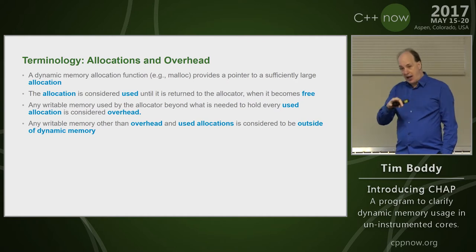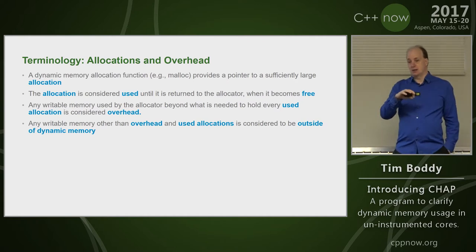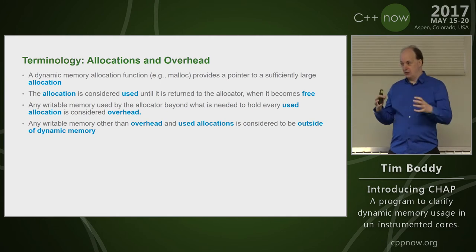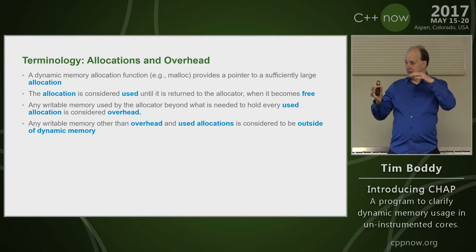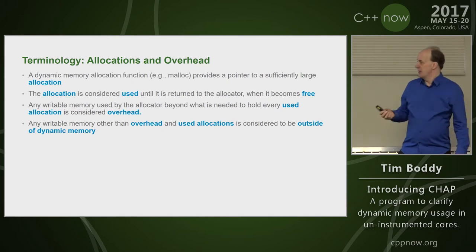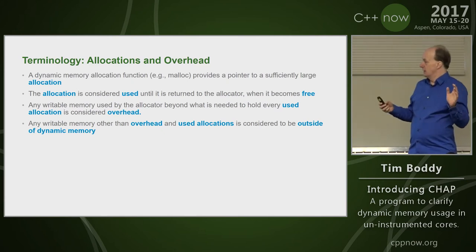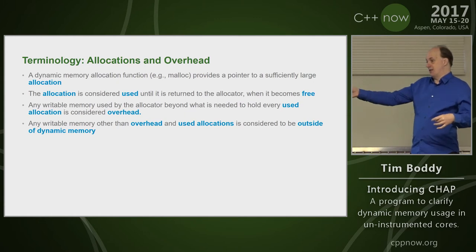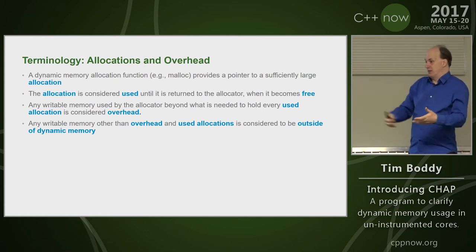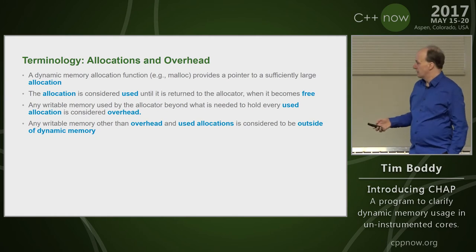So overhead includes free allocations, but also stuff the allocator uses for bookkeeping, and even statically allocated data like headers at the start. The reason that's important: if you're figuring out leaks and you've got a reference from static memory for the allocator itself, that's very different from something outside — from inside it could just be pointing to it for whatever reason.